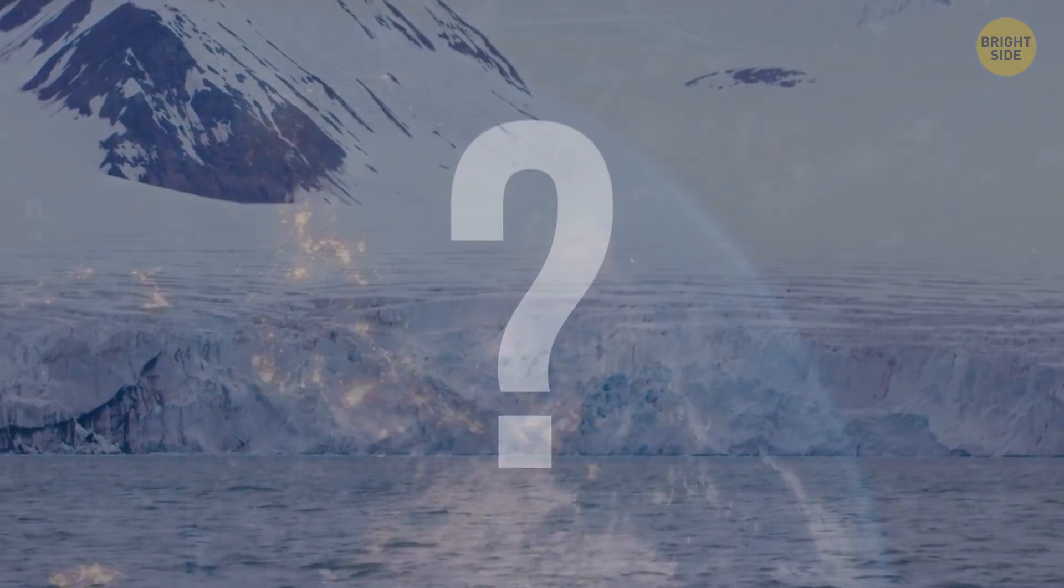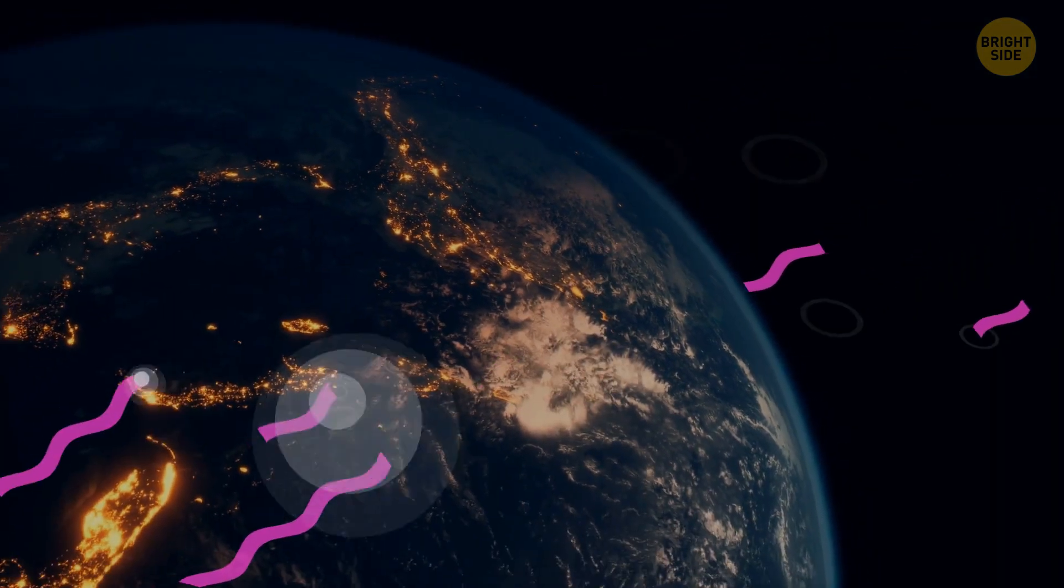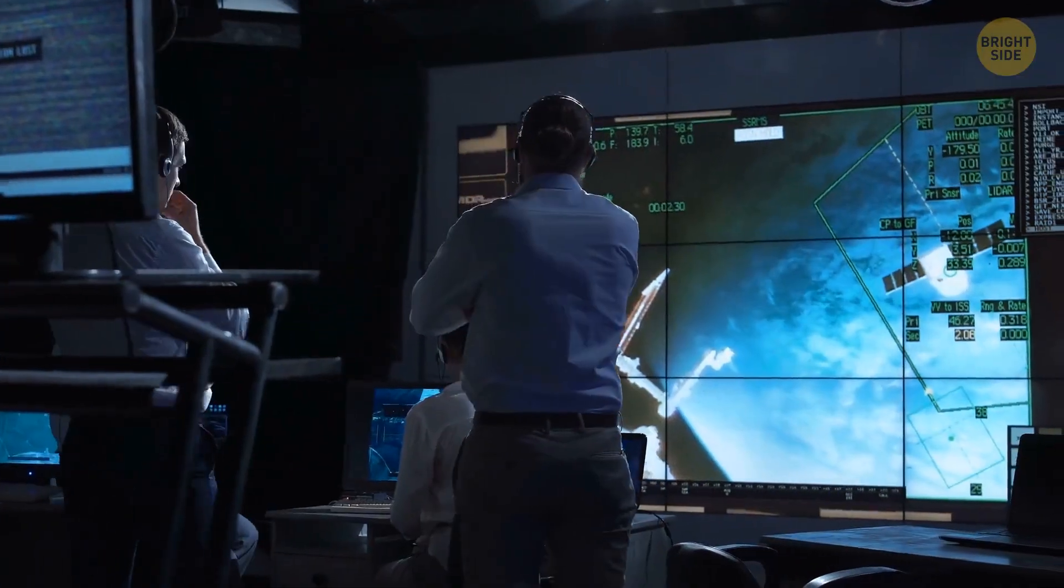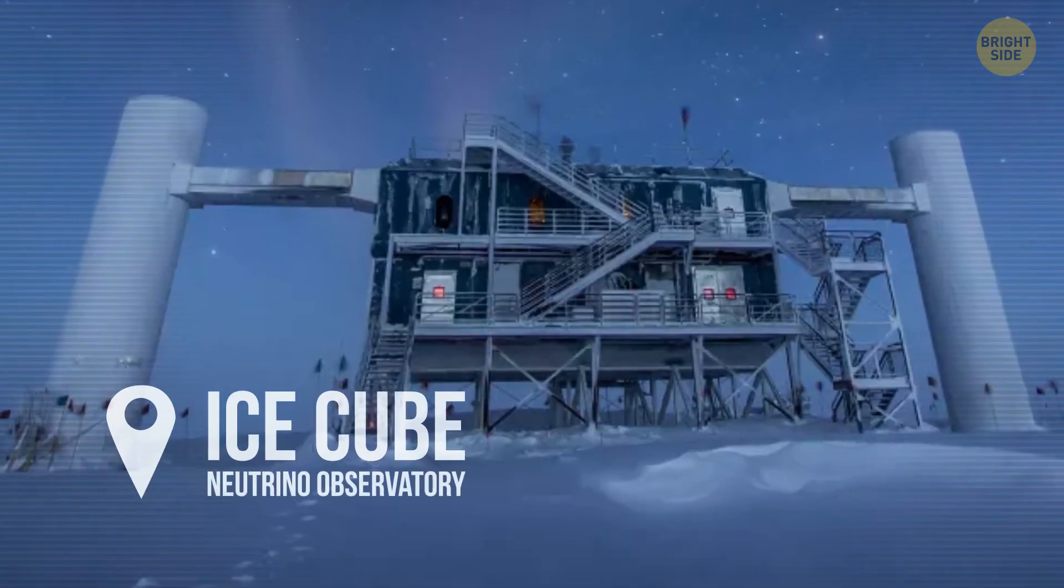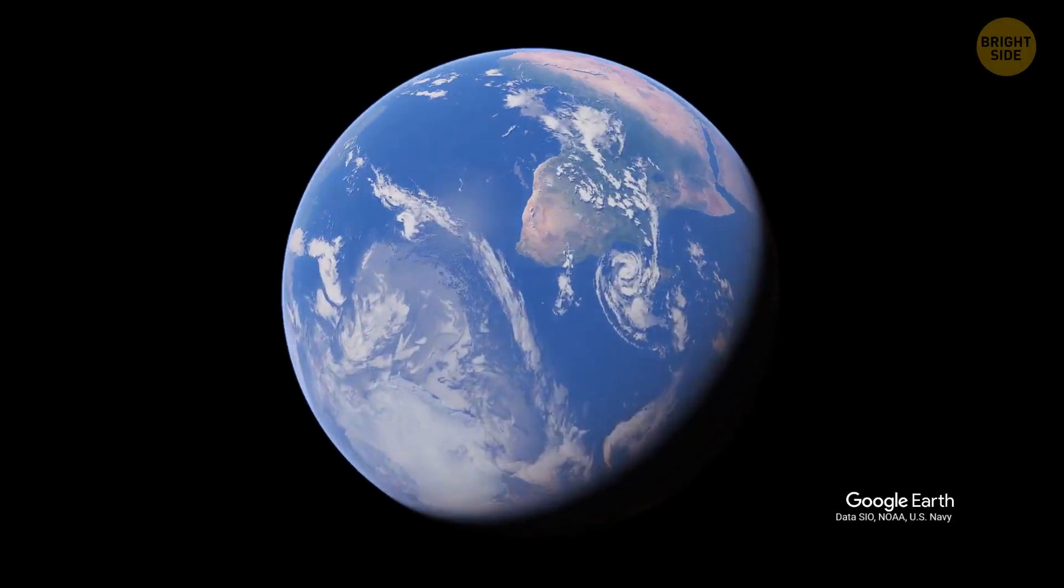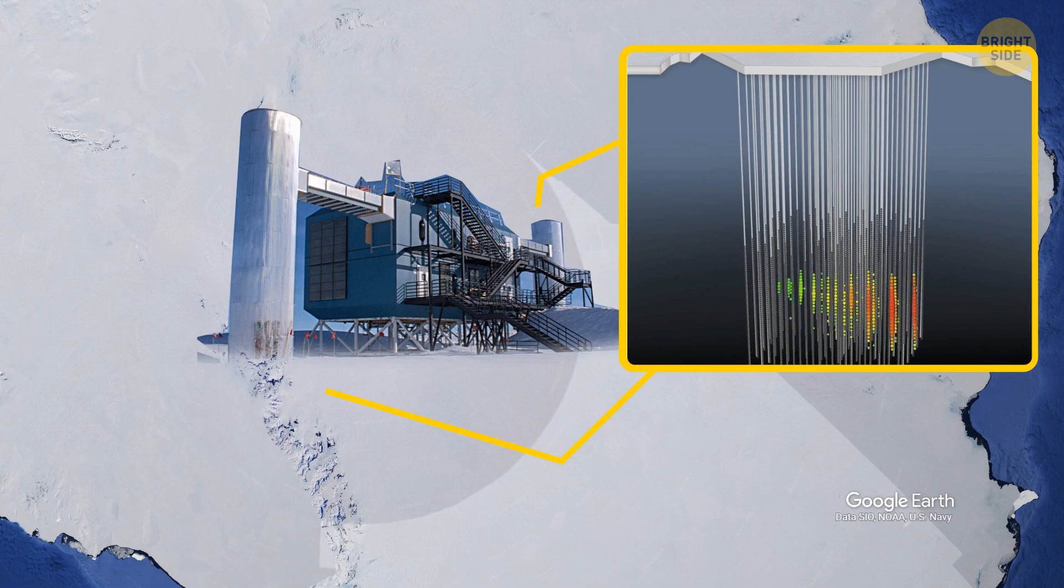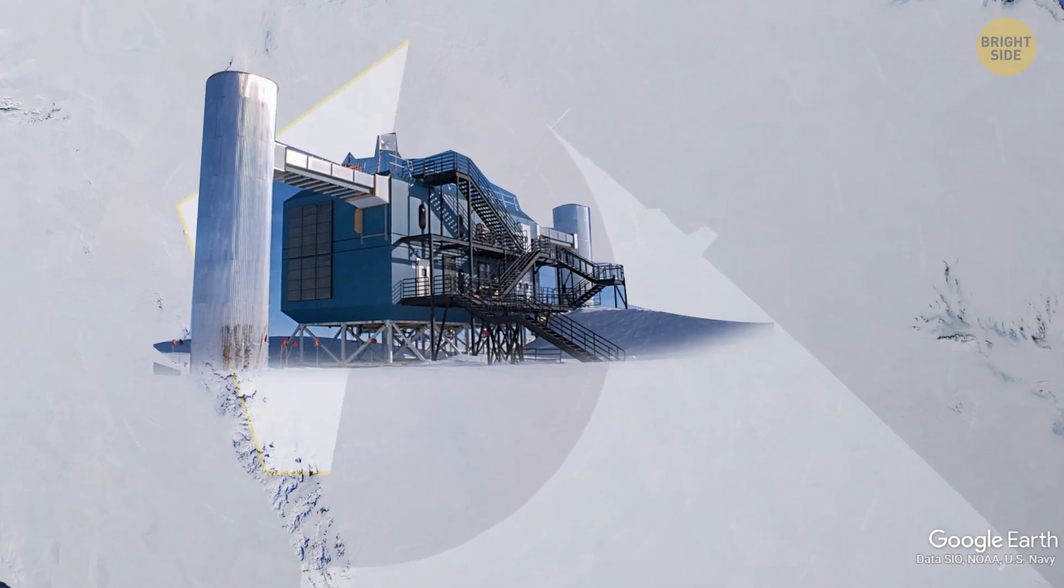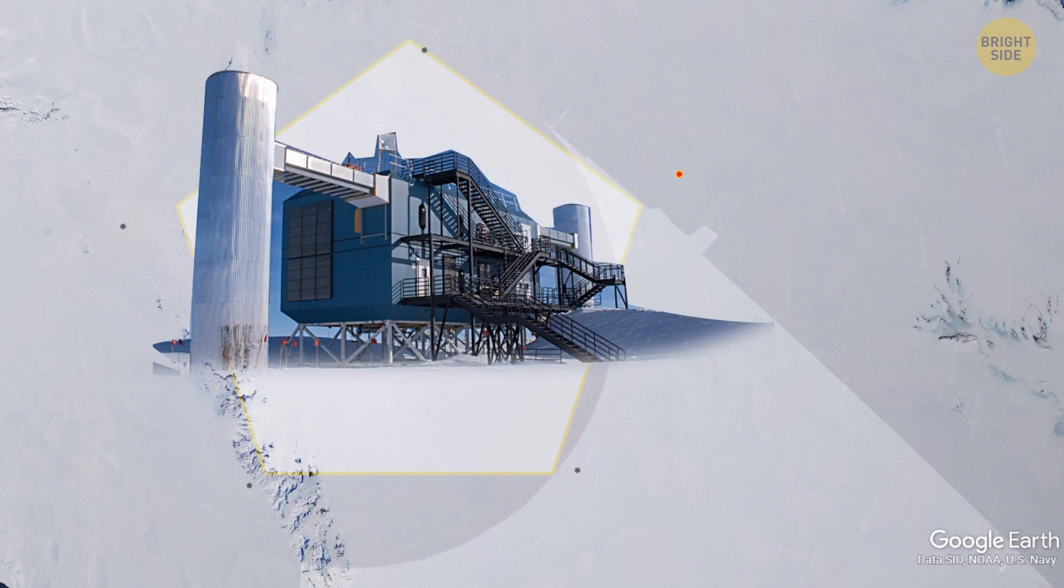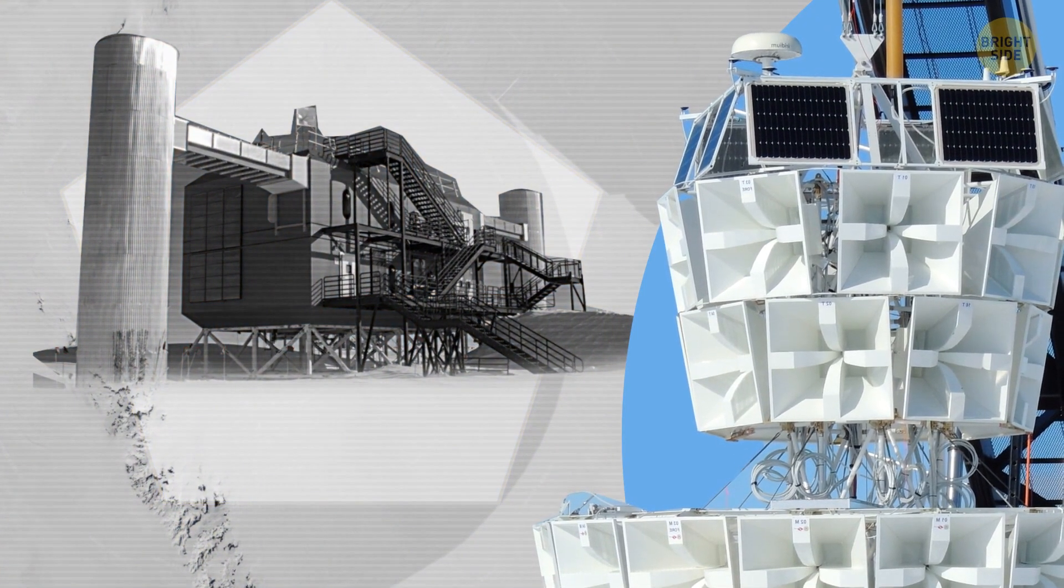Maybe they came to Earth from the other side and somehow passed through the boundary. To test this theory scientists decided to seek help from another cool neutrino observatory called IceCube. Yes, very cool. This observatory is located near the South Pole. It consists of 5,160 optical detectors buried in ice. And all these powerful detectors are designed to detect neutrinos.